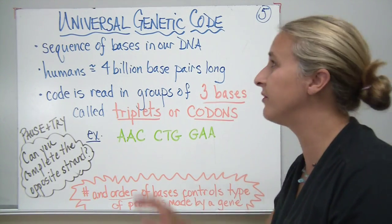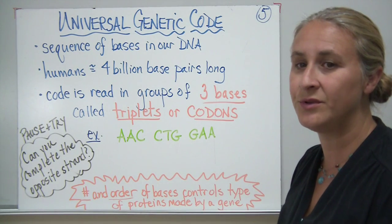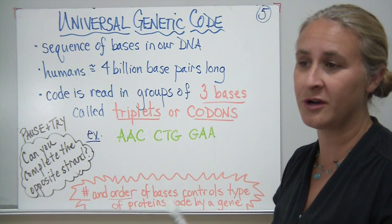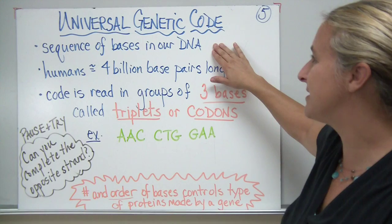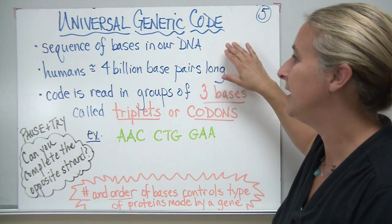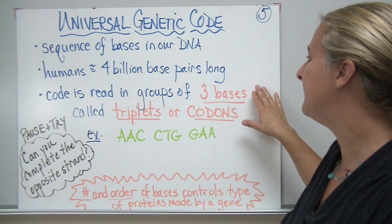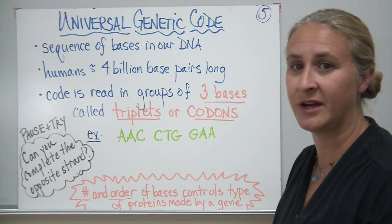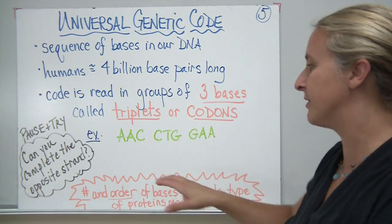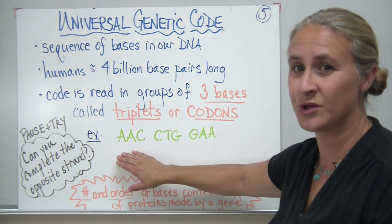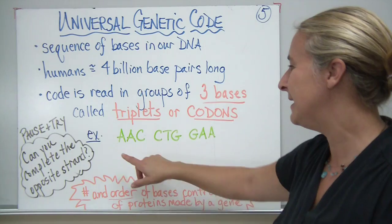When we talk about DNA we talk about something called the universal genetic code, which is really just the sequences of bases in our DNA. We call it universal because most living organisms use this same genetic code and are made up of DNA. Animals and plants all have DNA in them, which we share among everything. The sequence of bases in our DNA is pretty unique to each individual. Humans have approximately four billion base pairs making up our individual genetic code, and it's read in groups of three bases, which are called triplets or codons. It's kind of like chunking letters into words — our body uses words of DNA called codons, and every word only has three bases.